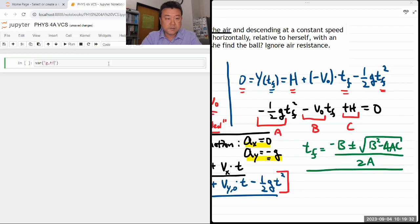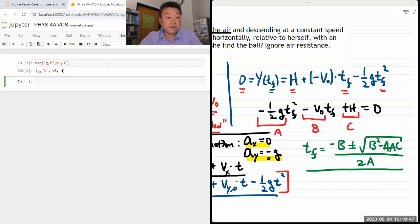So they're going to be g t final v naught and h. And if I forget, I can just do this again with additional variables. So with these variables, I can write down an equation. Equation one is equal to minus one half times g times t final squared minus v naught times t final plus h. So I want to draw a distinction between this is an assignment symbol and this is an equality symbol. So I'm assigning this equation that says left-hand side is equal to zero into this equation.